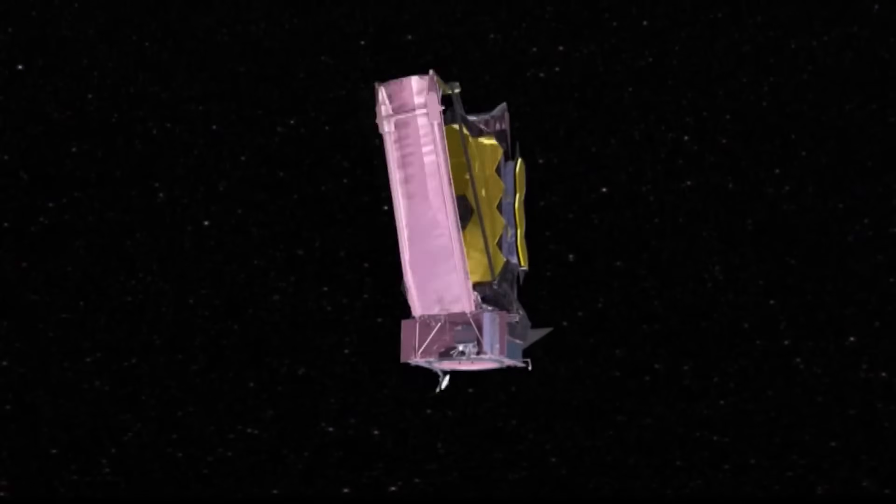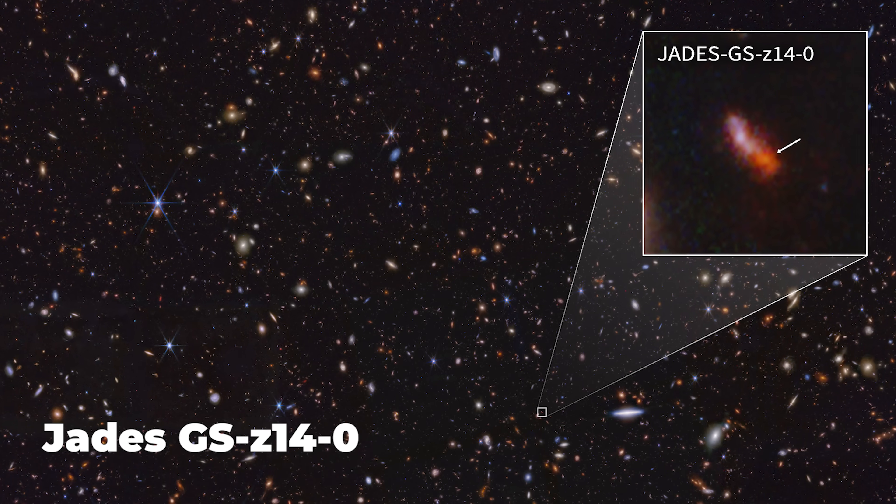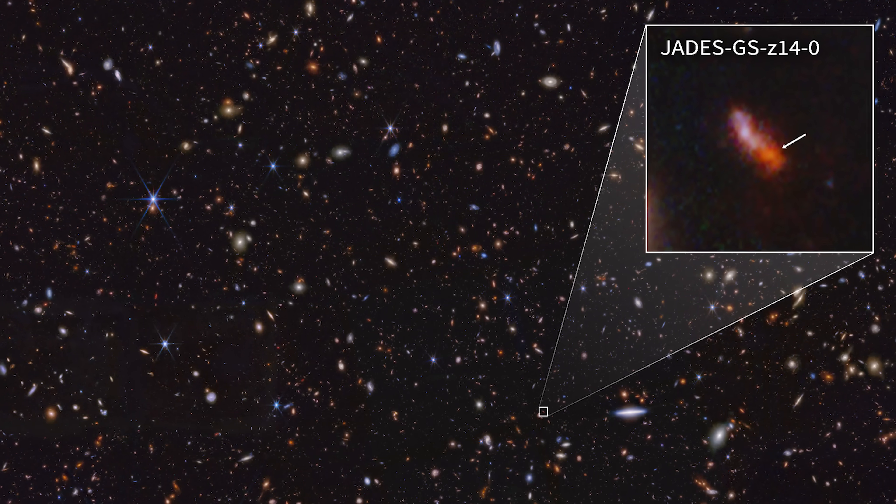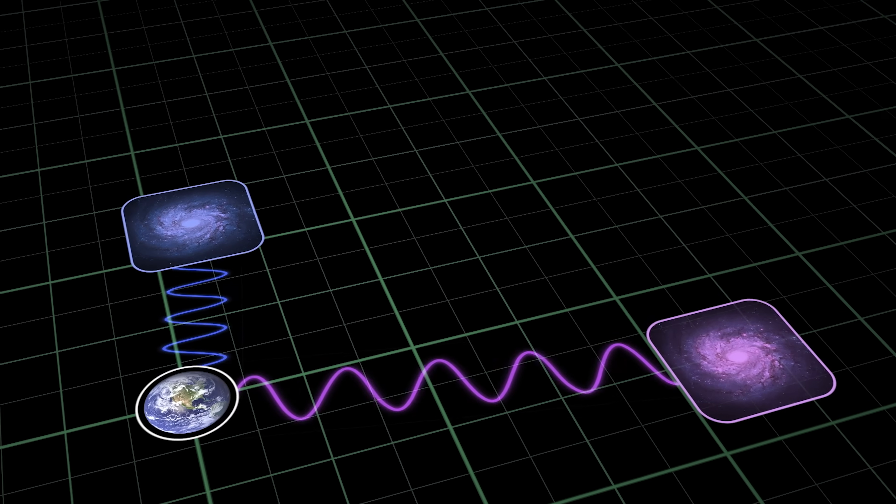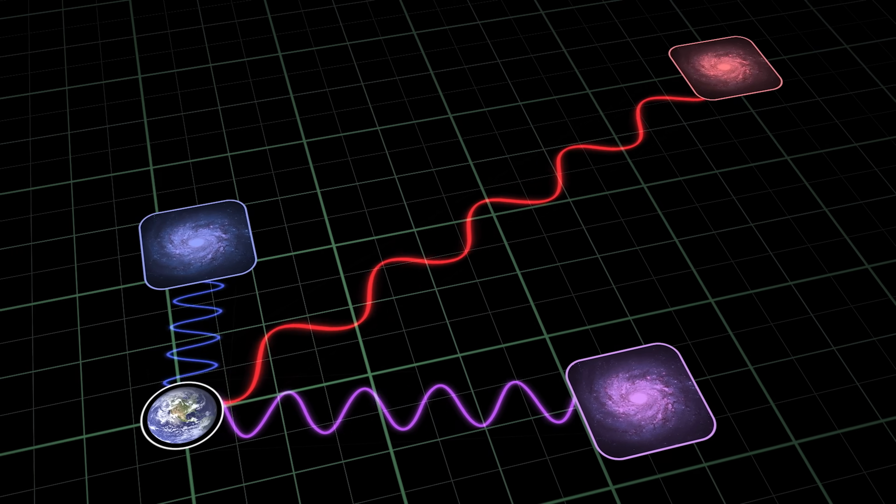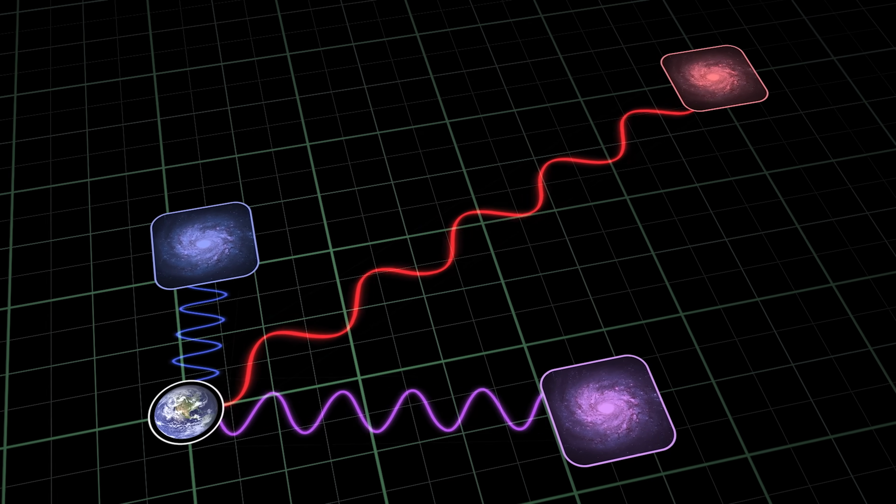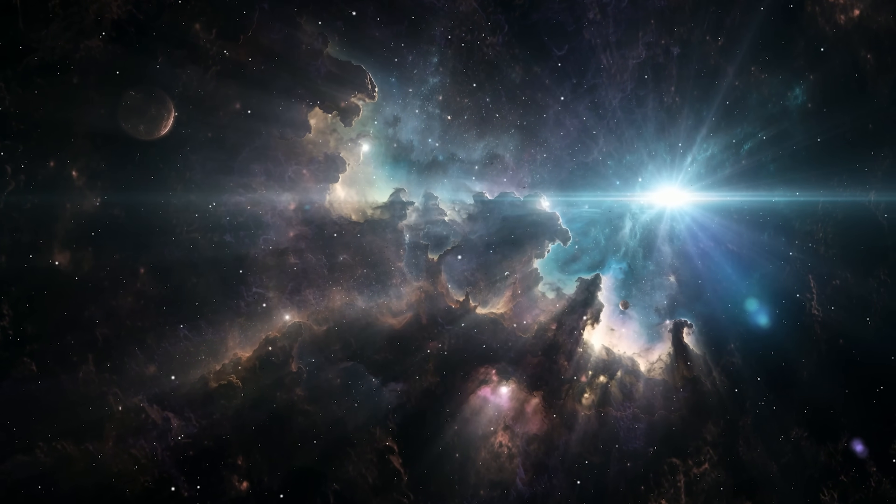Early in its mission, Webb identified a galaxy known as GS-Z14-0, confirmed at a redshift of 14.32. Redshift measures how much a galaxy's light has been stretched by cosmic expansion. The higher the redshift, the earlier we're seeing it. That alone was astonishing, but Webb wasn't done.